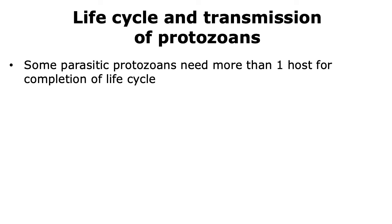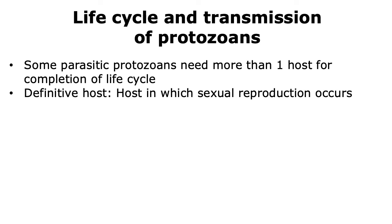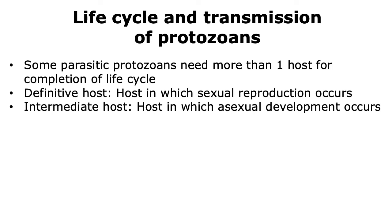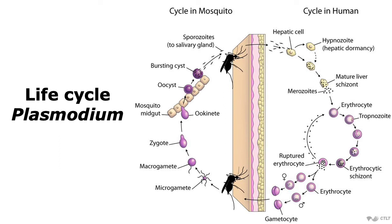Some protozoa complete their life cycle in multiple hosts. In such scenarios, the definitive host is the host in which sexual reproduction of the protozoan occurs, while the intermediate host is the other host in which asexual reproduction or asexual development can occur. The perfect example of a protozoan that completes its life cycle in more than one host is Plasmodium, which is the parasitic protozoan that causes malaria. One of the hosts of Plasmodium is the mosquito. When a mosquito infected with Plasmodium bites a human, the Plasmodium present in its saliva gets injected into the human and thus gains entry into the human host.